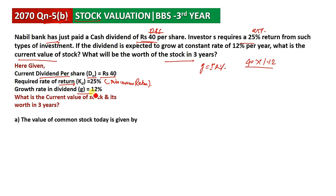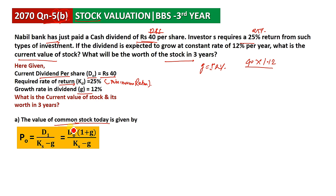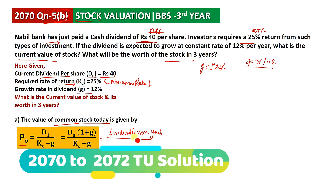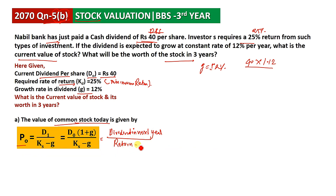Now number one: we want to find the value of the stock. Using the Gordon Growth Model formula, the present value of the stock equals D1 divided by Ks minus g, where D1 is derived from D0. The formula is: dividend in next year divided by return minus growth.